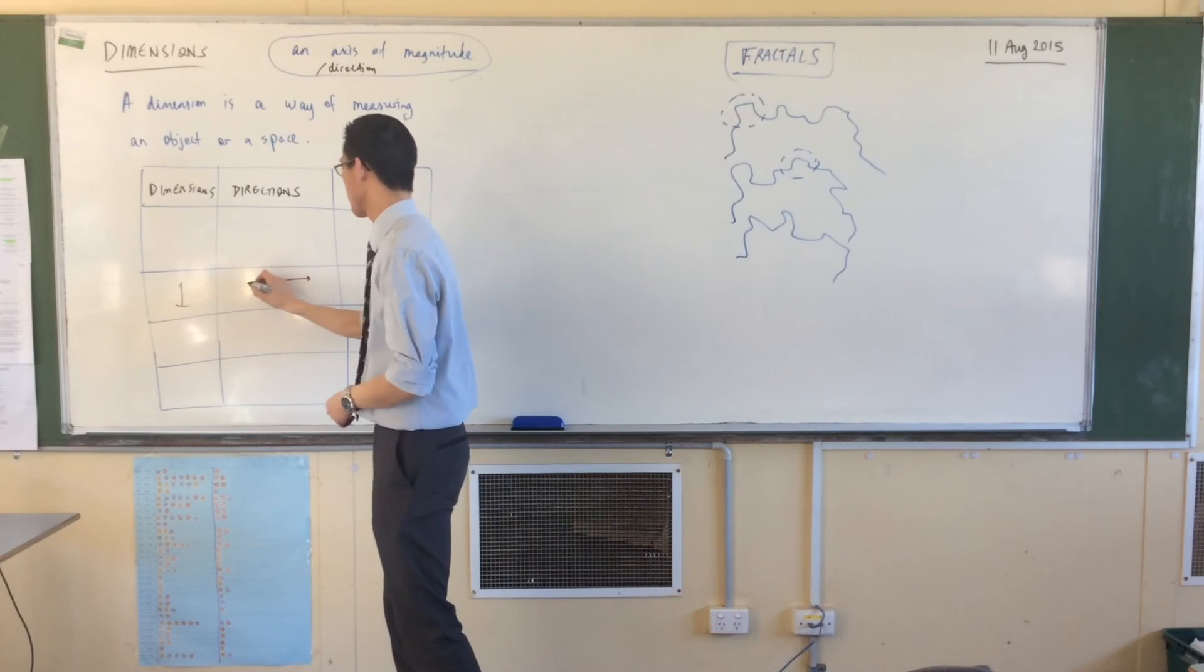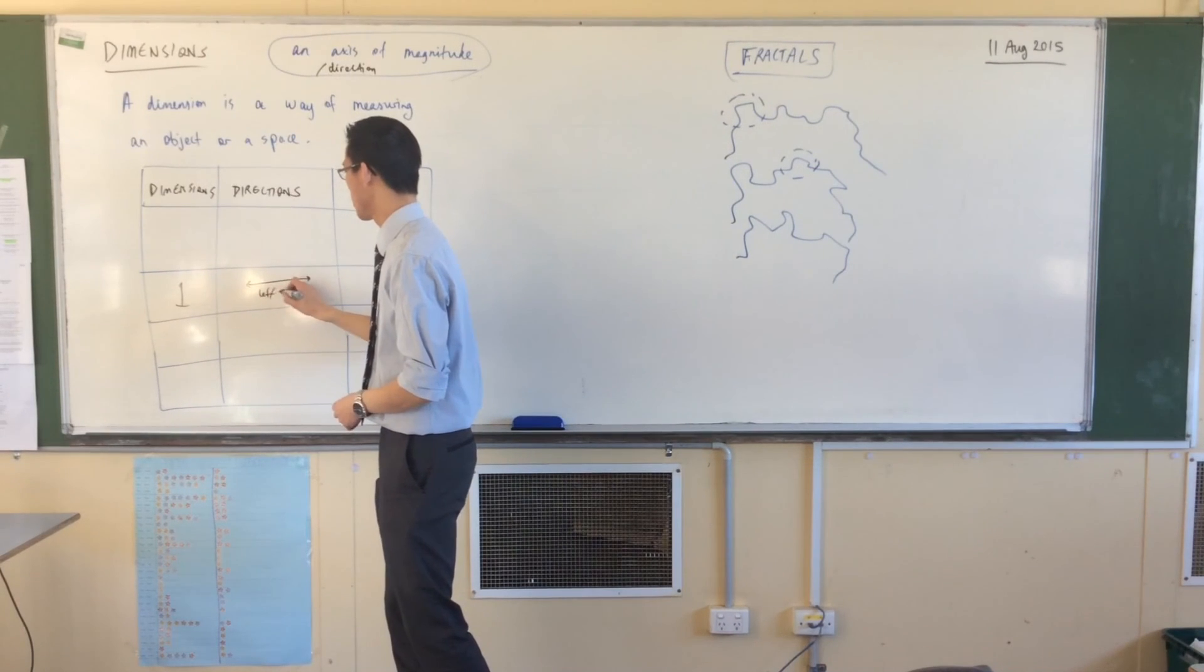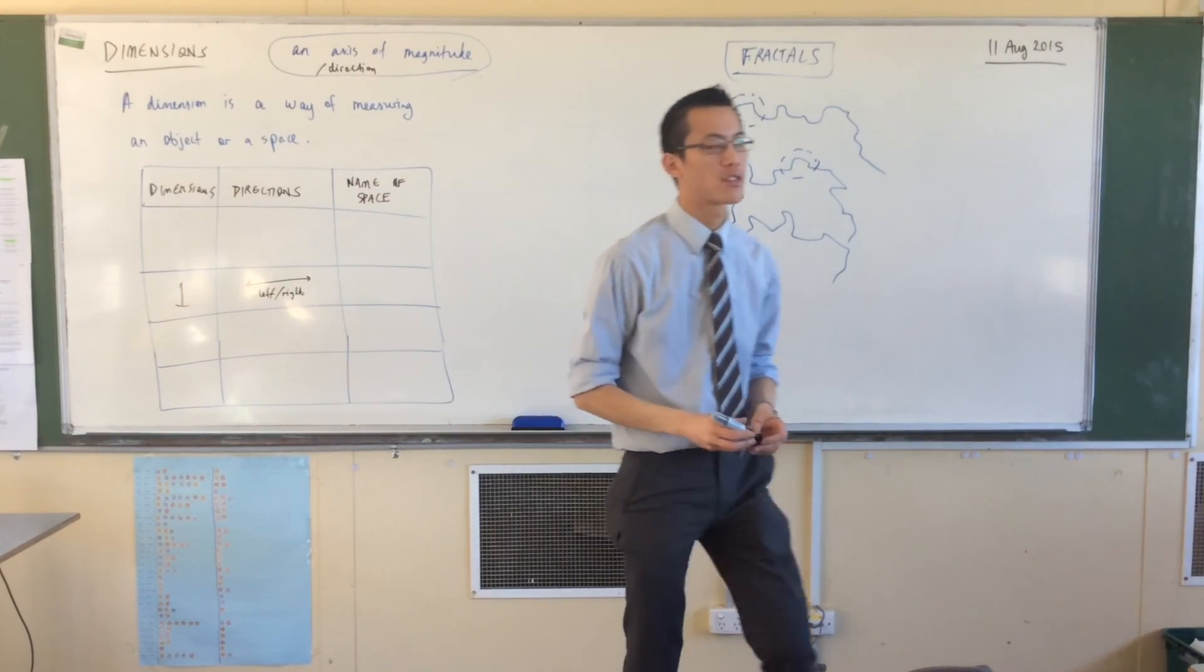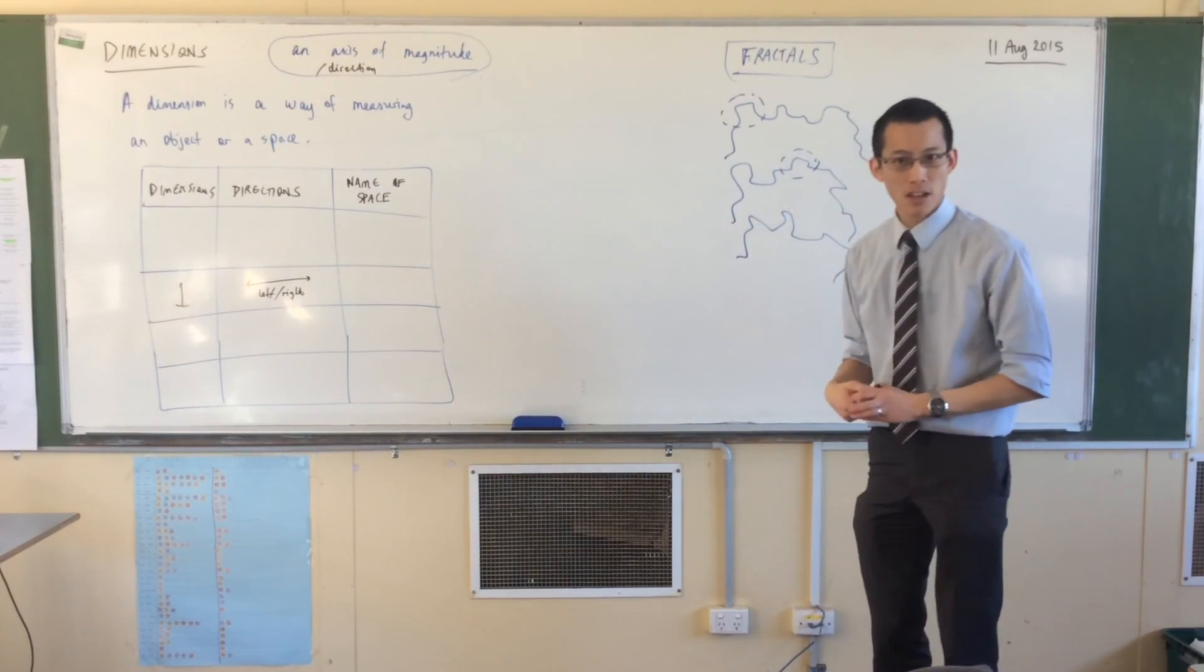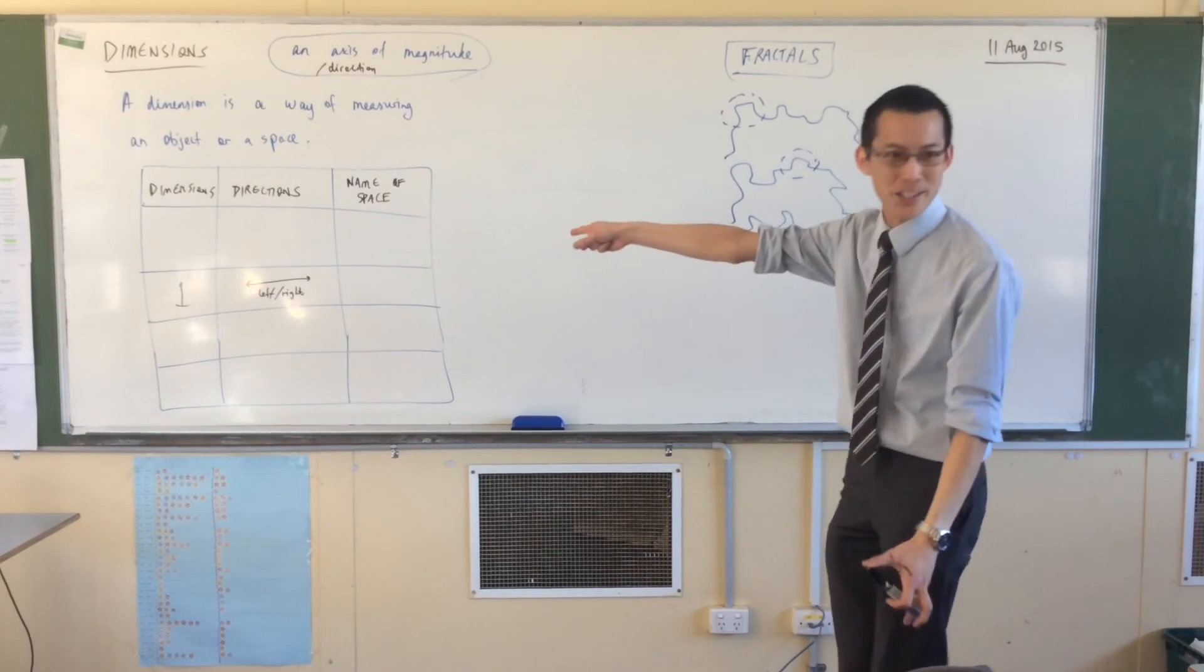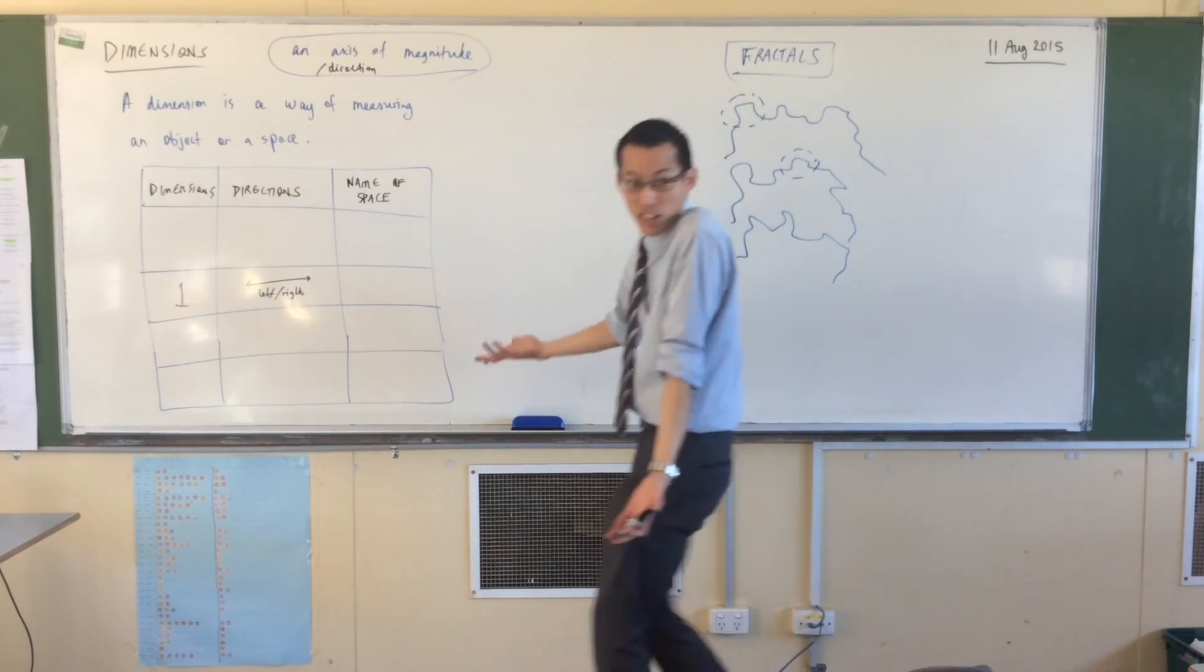So what does it look like? It looks something like this. Left, right. That's what a one-dimensional object or a one-dimensional space looks like. Now, it goes on forever and we have a name for this. What do you call such an object? It's just a line.